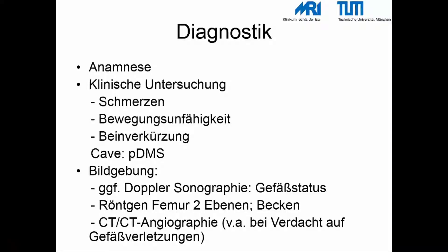Wichtig für die Therapie von Femurschaftfrakturen ist eine ausführliche Anamnese. Danach sollte die klinische Untersuchung erfolgen, bei der Schmerzen, potenzielle Bewegungsunfähigkeit oder Beinverkürzung dokumentiert werden. Wichtig ist erneut, die periphere Durchblutung, Motorik und Sensibilität zu untersuchen. An Bildgebung bietet sich für Gefäßbegleitverletzungen die Dopplersonografie an. Die Standardbildgebung ist die Röntgenuntersuchung des Femurs in zwei Ebenen. Bei Unklarheiten ist die großzügige Indikation zur CT bzw. CT-Angiographie zu stellen.